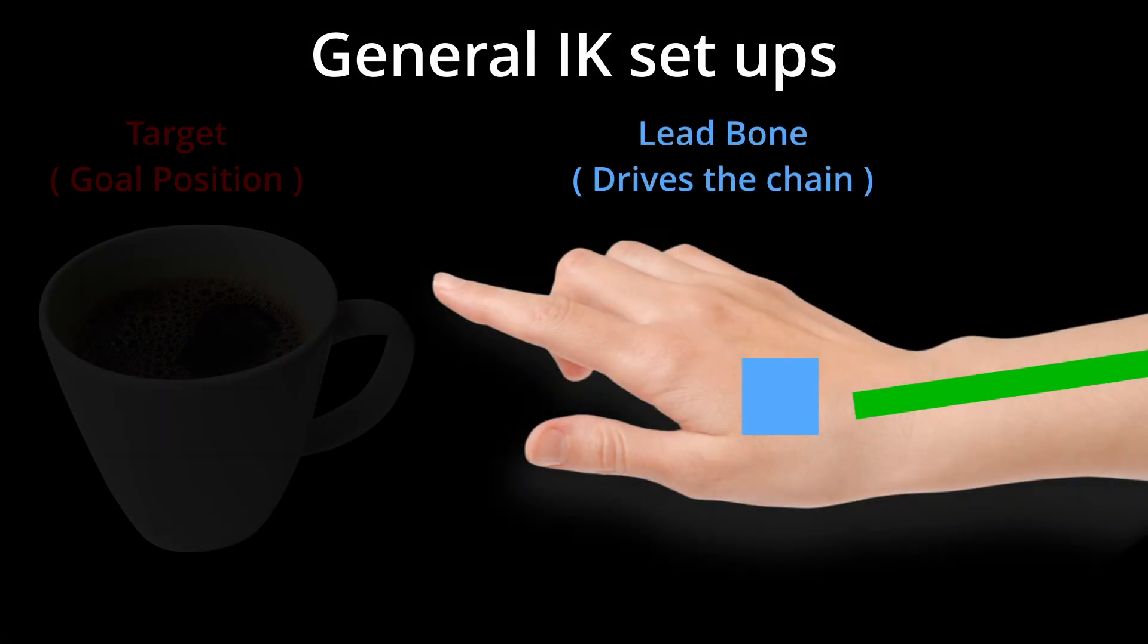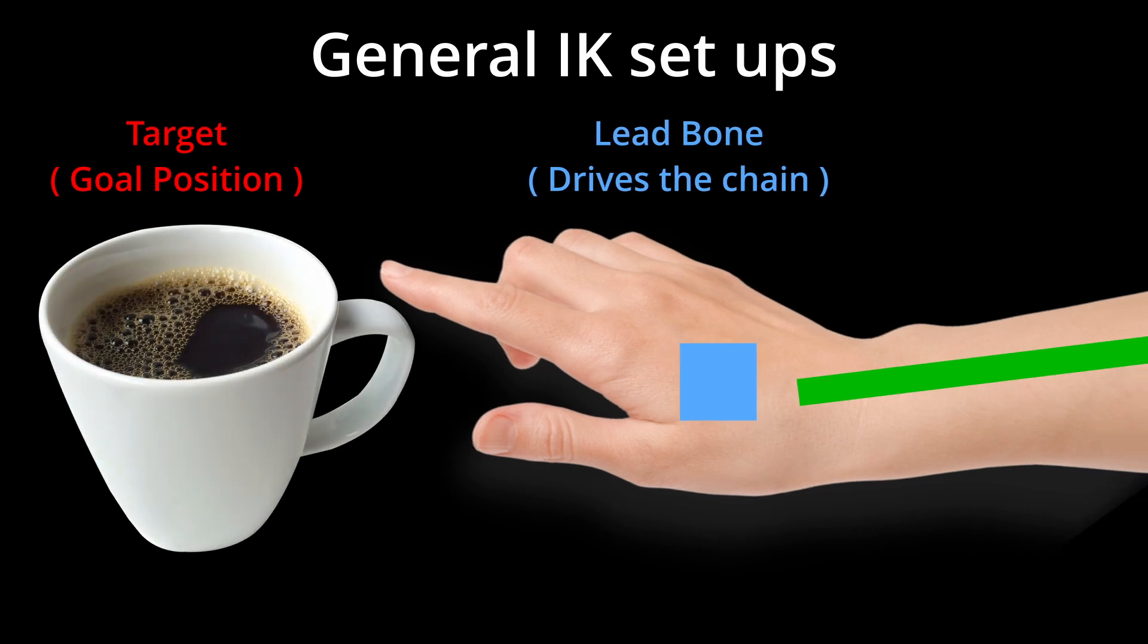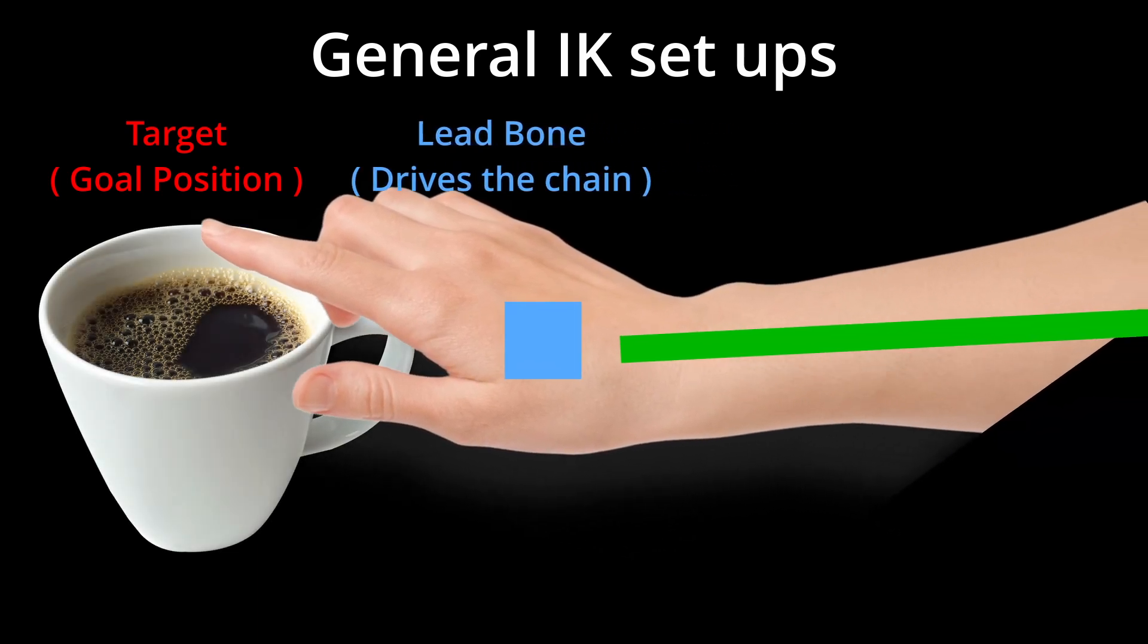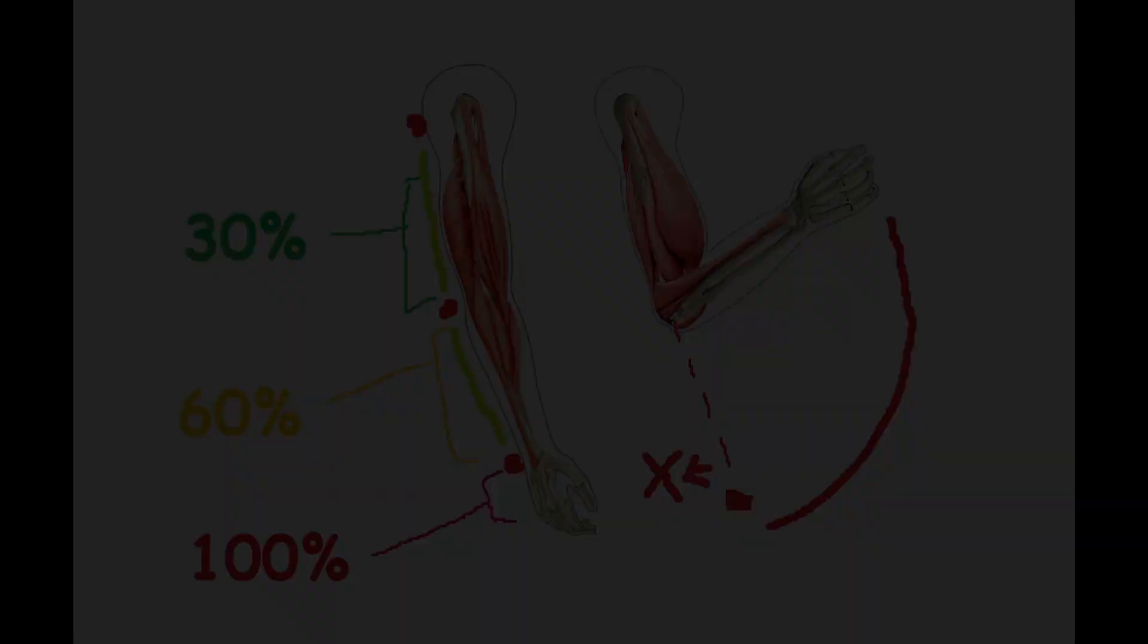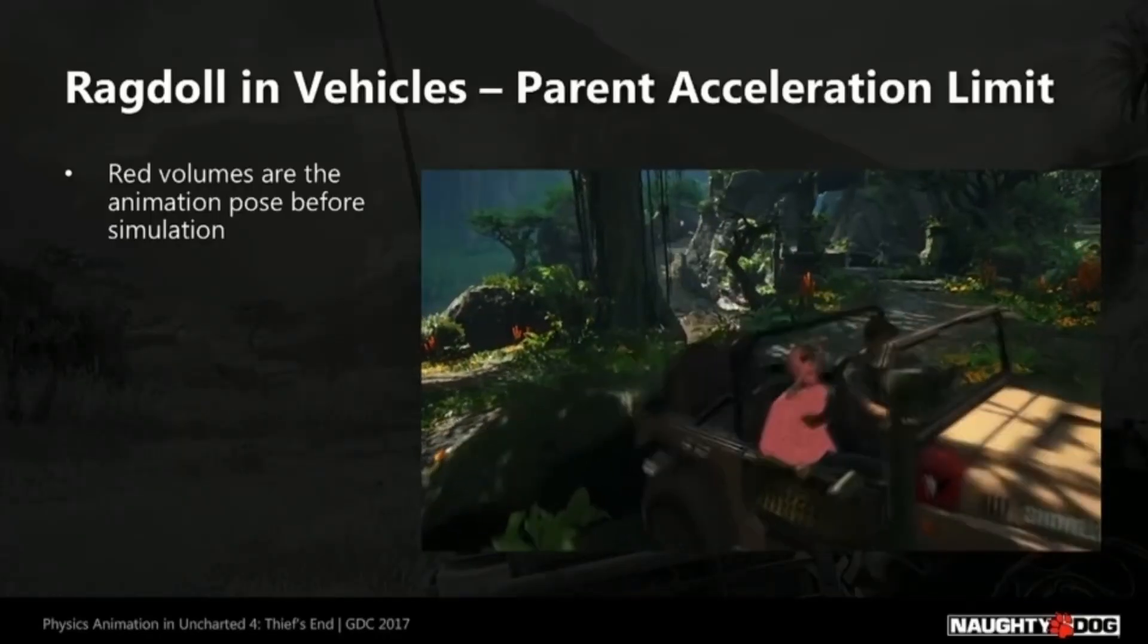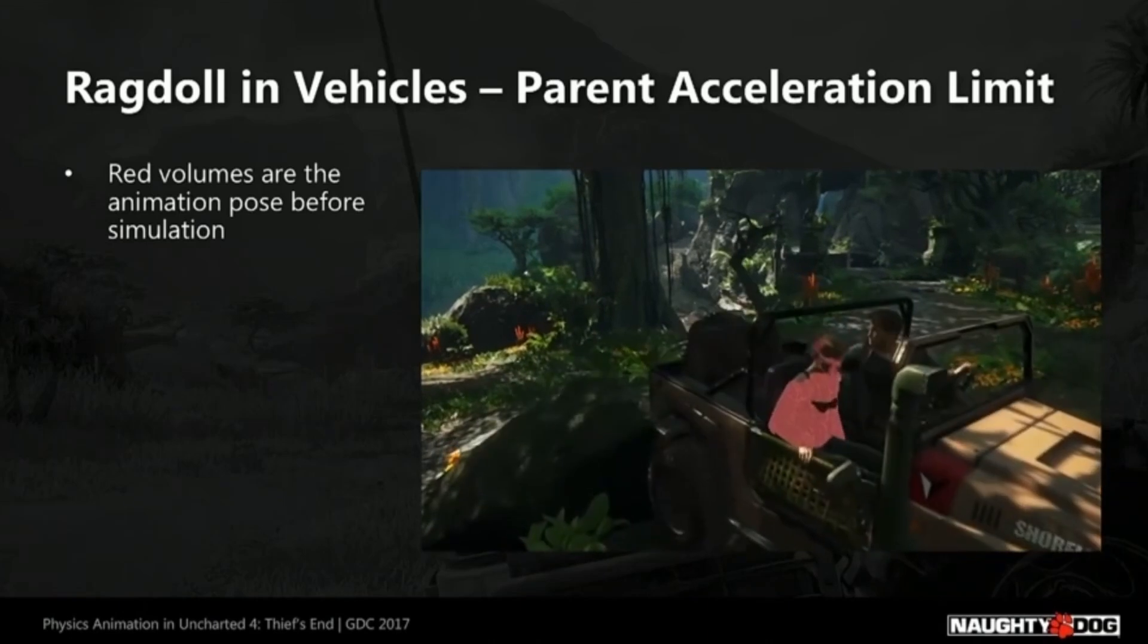Most of these setups have two main points, a leader and a target goal. If you reach for a cup, that is your target and your hand is the lead bone. You can set bend limitations and have bones down the chain be less affected to change the feel and result. This can even be blended in with pre-made animations to give visual feedback in life.